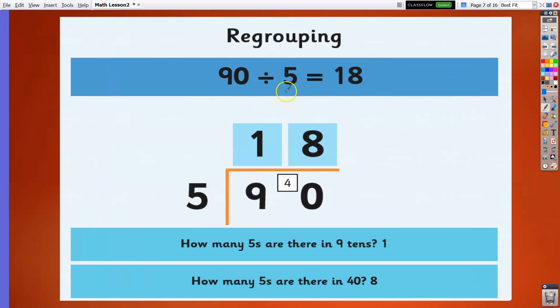90 divided by 5 is 18. Again, 9 divided by 5 is 1, remainder 4. Now we get 40. 40 divided by 5 is 8. The answer is 18.